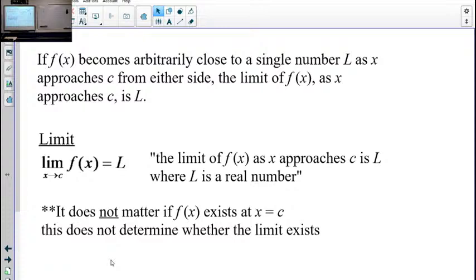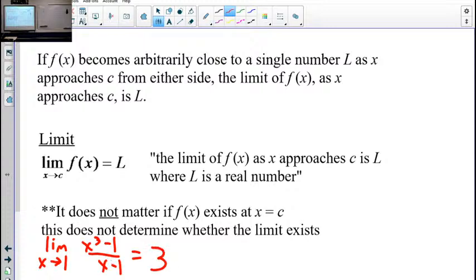And so the notation in this case, in the example we just did, would look like the limit as X approaches, what was the X value we were studying around? One, of the function, so we're going to put in the function, X cubed minus 1 over X minus 1, equals the Y value it was getting closer to, is 3. That is what we are saying. And we're going to talk about this both in terms of studying the graph to do it, look at what's happening around that point, and studying the algebra. What function is this looking like or behaving like at other places?